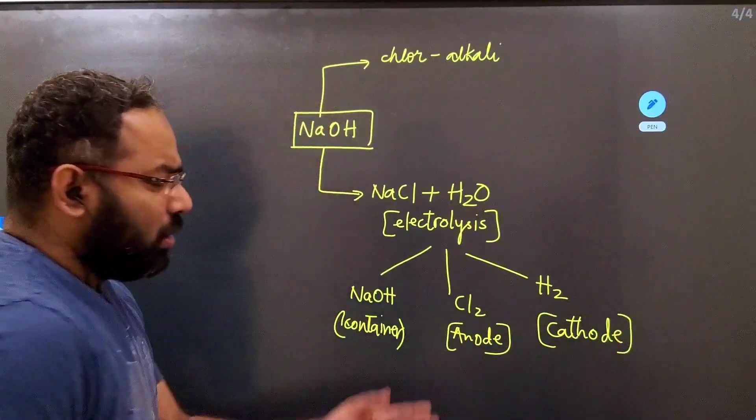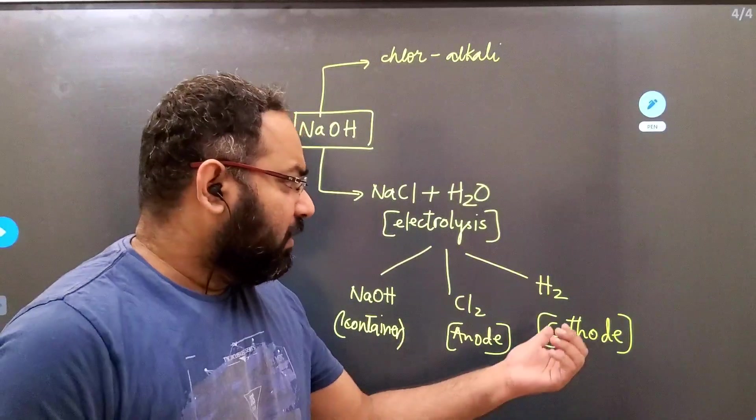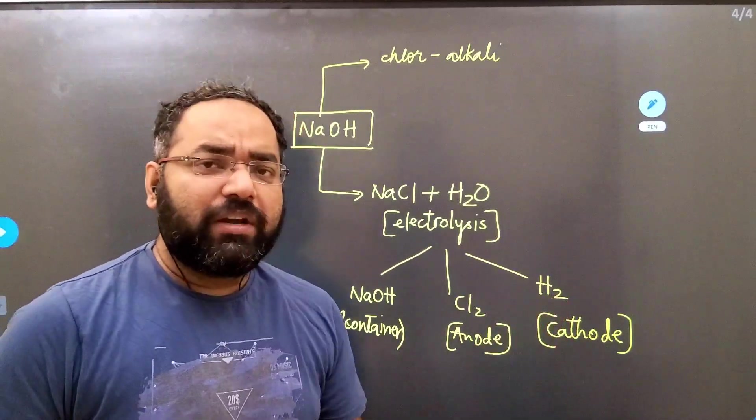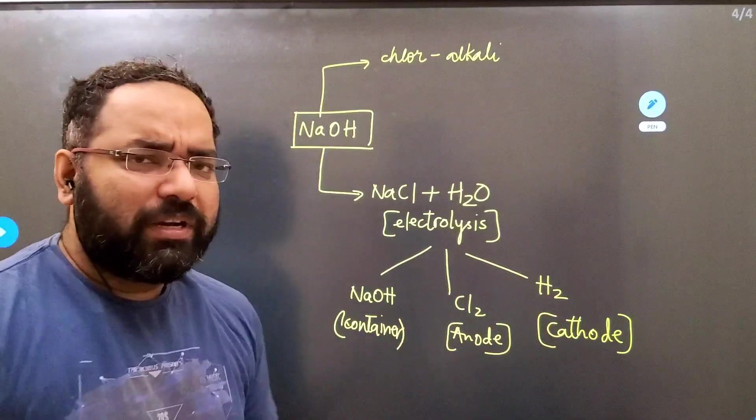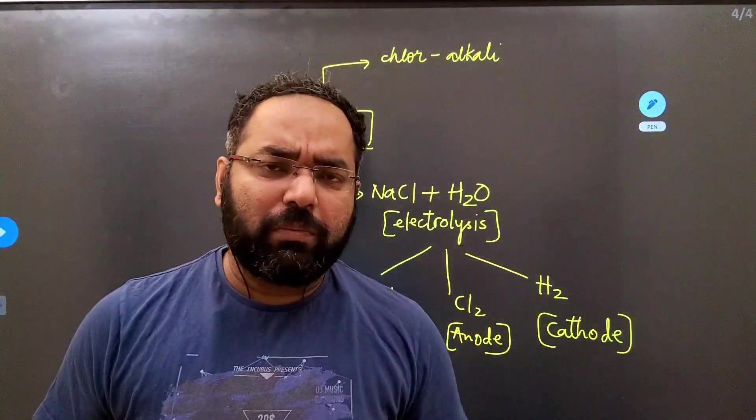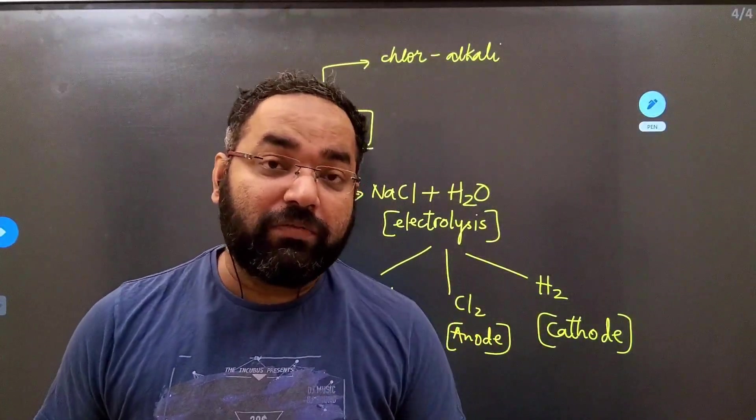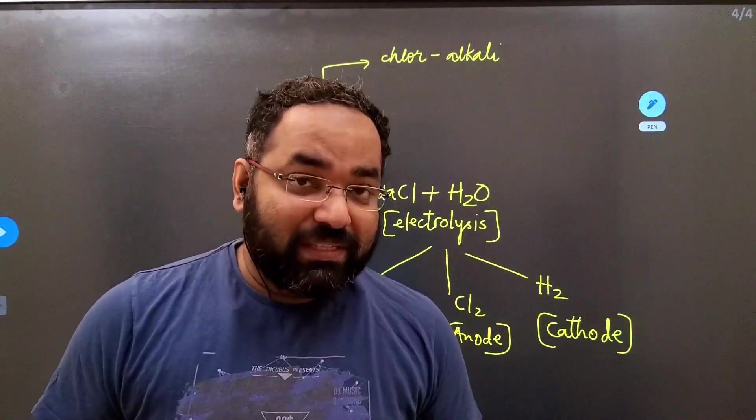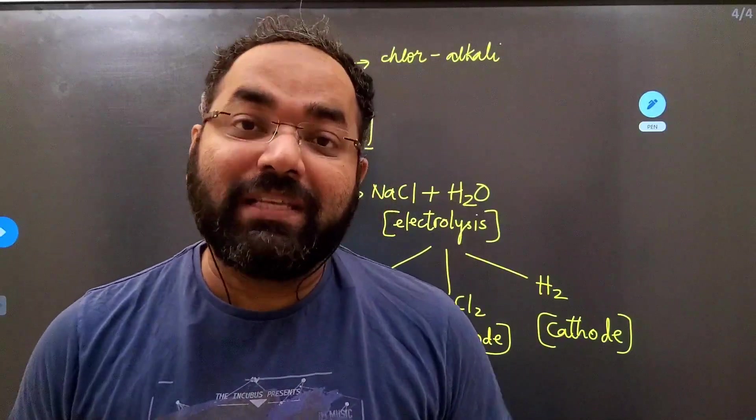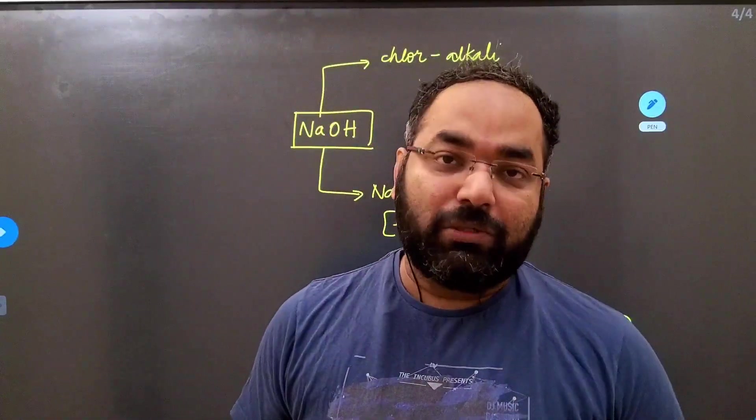This has multiple uses. Chlorine, we all know, is a disinfectant. When you look at hydrogen, hydrogen can be used as rocket fuel. Sodium hydroxide has multiple uses which I spoke about in the beginning. It can be used in the manufacture of soaps. So with this, we have actually completed summarizing the entire chapter in the easiest way possible.